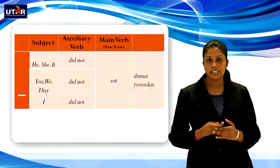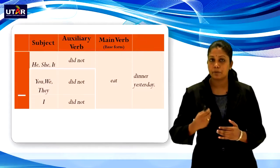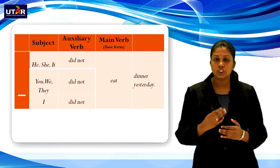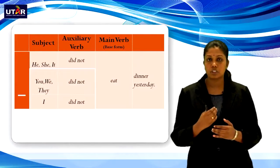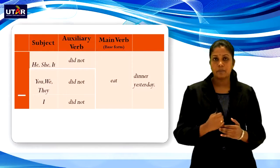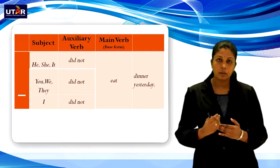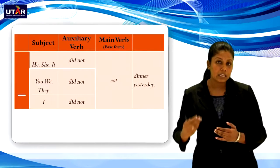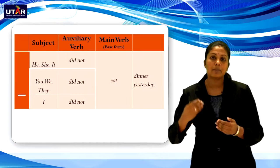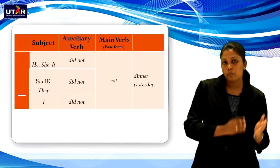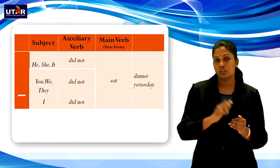Now let's move on to negative sentences. In order to construct negative sentences in past simple tense, you should use the auxiliary verb did not. The sentence structure would be subject, followed by the auxiliary verb and the main verb. The main verb will not be in past form but in base form, since we have used the auxiliary verb did not.